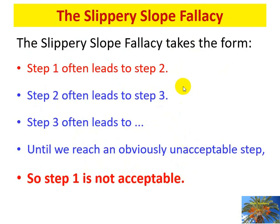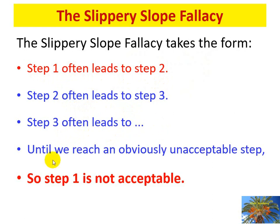The slippery slope fallacy takes this form: Step 1 often leads to Step 2; Step 2 often leads to Step 3; Step 3 often leads to the next step — until we reach an obviously unacceptable step. Therefore, Step 1 is not acceptable, because of the unacceptability of the final step. This is the general form of the slippery slope fallacy.